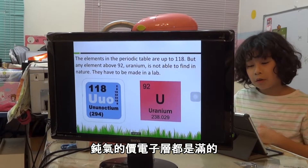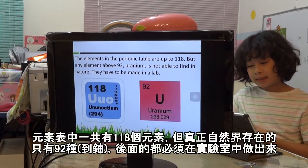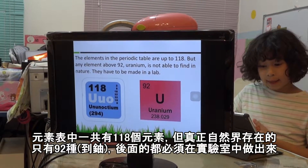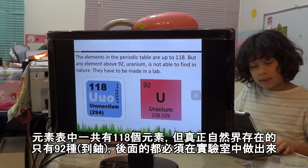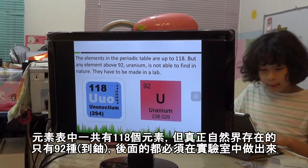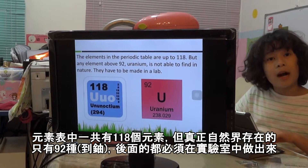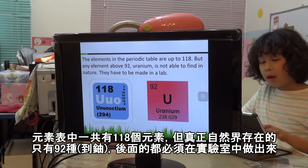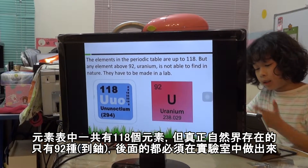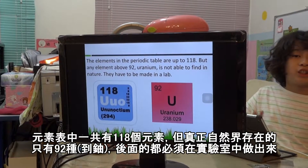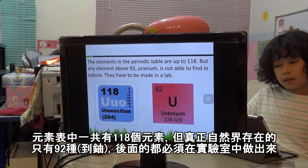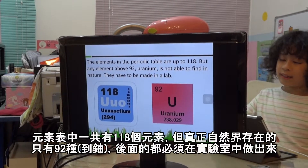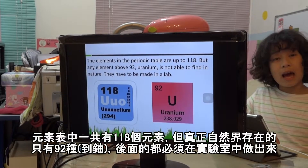You can see 118 elements on the periodic table, but any element with an atomic number above 92 — uranium — cannot be found in nature; you can only find them in a lab.